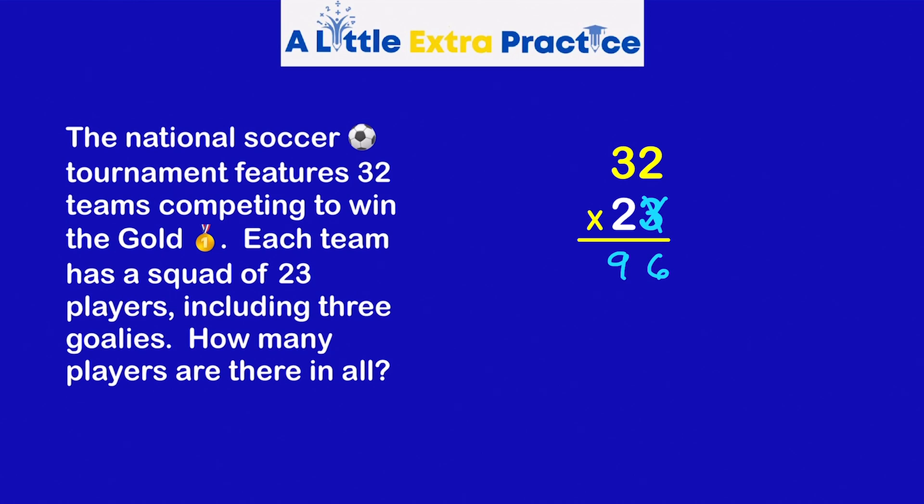I'm multiplying 20 times 32, so I put the 0 down. 2 times 2 is 4. 2 times 3 is 6. The partial products are 96 and 640.